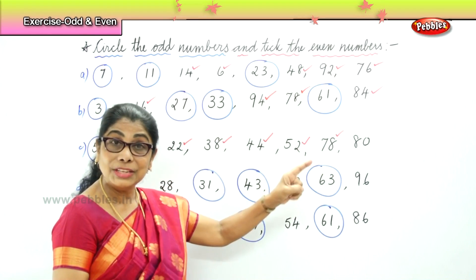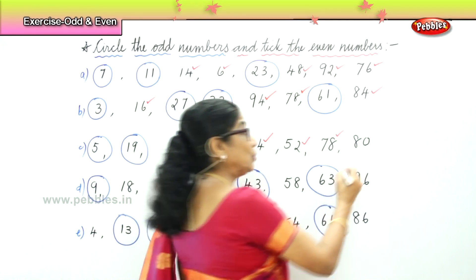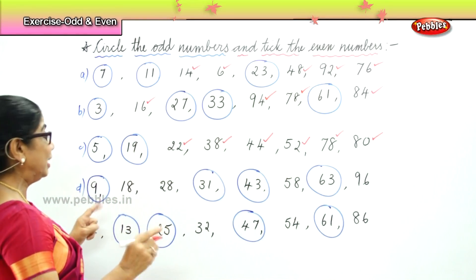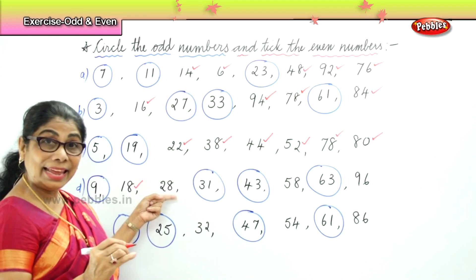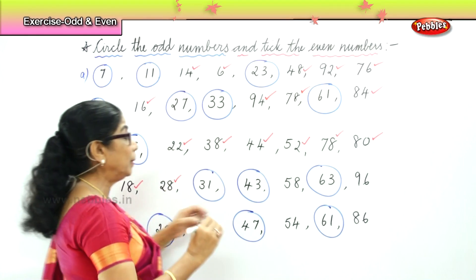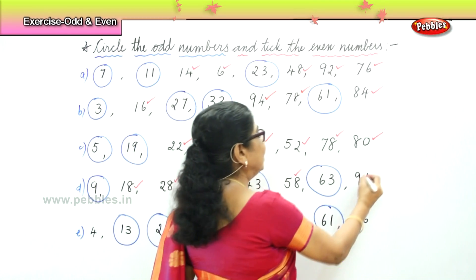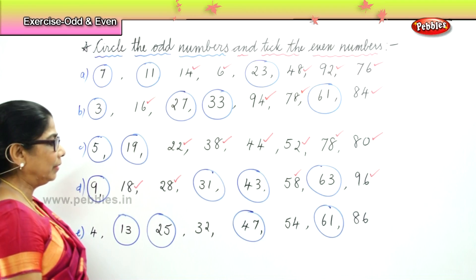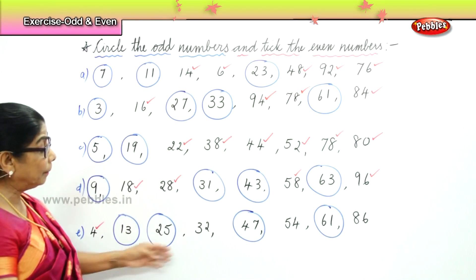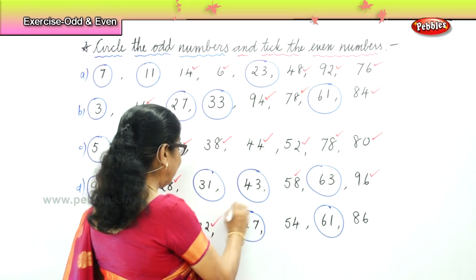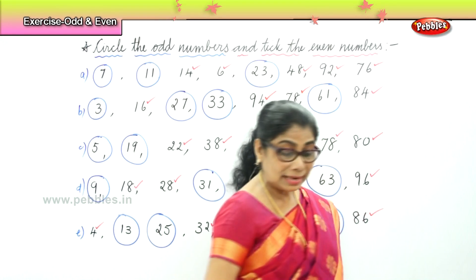Eighty ends in zero — two, four, six, eight, ten — so all numbers ending in zero can also be paired up; that is also an even number. Now eighteen is an even number. Twenty-eight ends in eight — that's also an even number. Fifty-eight — even number. And finally ninety-six ends in six — that's also an even number. Number four — that can be paired up and is an even number. Thirty-two ends in two — it's an even number. Fifty-four ends in four — it's an even number. And finally eighty-six ends in six — even number.